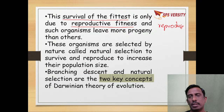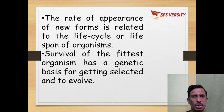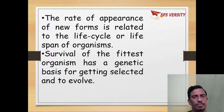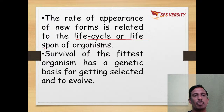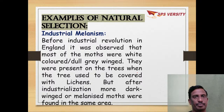The two key concepts of Darwin's theory are natural selection and branching descent. New forms of life depend on the life cycle or life span of organisms. Survival of the fittest has a genetic basis. We will see some examples of natural selection.